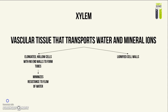The cell walls are also lignified, which means it has lignin in the cell wall, and this is so that it can support the stem of the plant, and also to make the cell walls waterproof, so that water will not leak out of the xylem, since it is used to transport water after all.